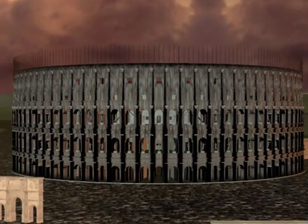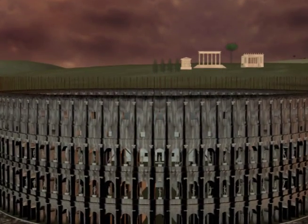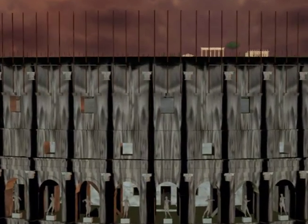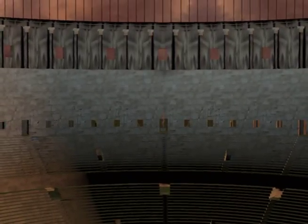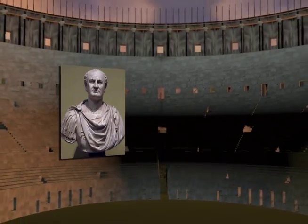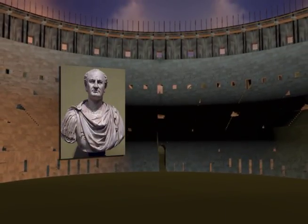The year was 80 A.D., and the Flavian Amphitheater, which we now refer to as the Roman Colosseum, opened its gates. Started under the reign of Emperor Vespasian, the Colosseum was finished when his son Titus became emperor.